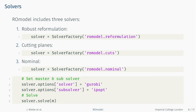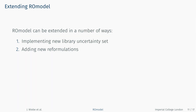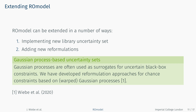For each of these options, any deterministic solver available within PyOMO can be used as a subsolver, and a problem using Roamodel can be solved in exactly the same way as any other PyOMO problem. Roamodel is open source and easily extensible in two main ways: the uncertainty set library can be extended to include new geometries, and new reformulations can be added to the reformulation-based solver. This will be illustrated using the example of Gaussian process-based uncertainty sets, developed for optimization problems containing uncertain black-box constraints.